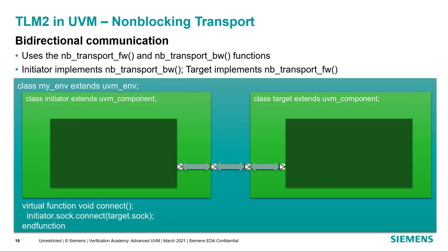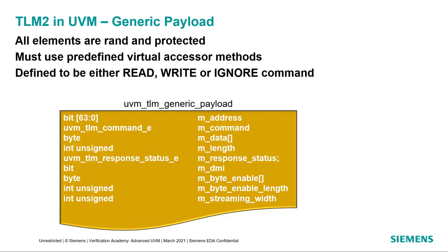A non-blocking initiator socket must ultimately be connected to a non-blocking target socket, just as a port must eventually be connected to an implementation. UVM also includes pass-through sockets for hierarchical connections — you can have an initiator socket connected to a pass-through initiator socket, connected to a pass-through target socket, connected to a target socket. TLM2 also includes the generic payload transaction type to model a general-purpose bus transaction. For simple bus protocol modeling it has enough content on its own; for more advanced protocols needing attributes like protection fields, cache properties, and quality of service, it can be extended using an extension object. All members are randomizable and protected, accessible only via predefined accessor methods.